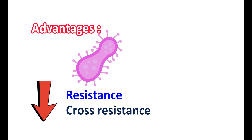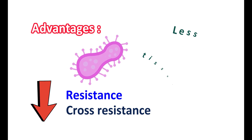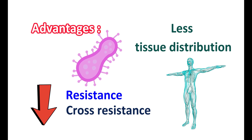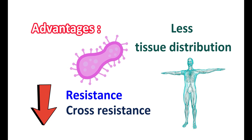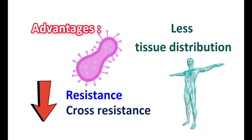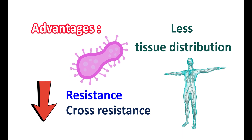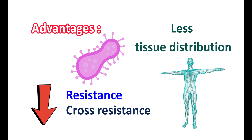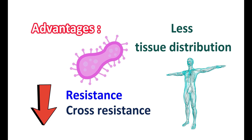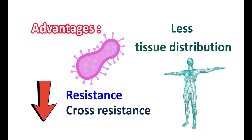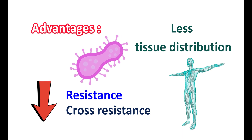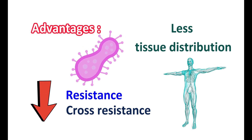Another limitation of this medication is that it has less tissue distribution. Therefore, it cannot act on bacterial infections that are widely spread in the body. This may result in the reappearance of bacteriuria — the presence of bacteria in the urine. In such conditions, other antibacterial agents with broader tissue distribution should be used to completely eradicate this infection.